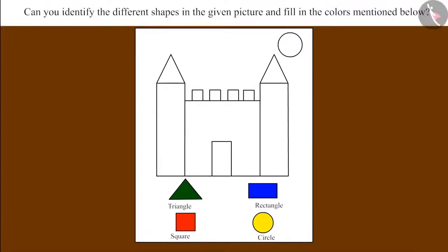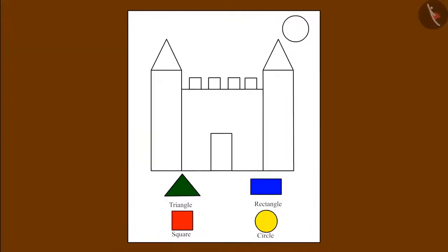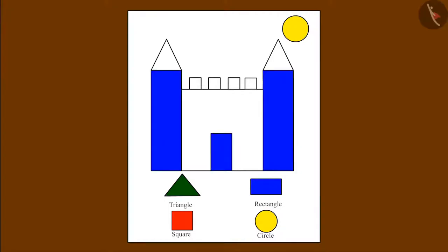So children, all the circles in this picture have to be filled with yellow color. Can you identify the circle in this picture? Yes, this is a circle — it will be filled with yellow color. Now all the rectangles have to be filled with blue color. Can you identify the rectangle in this picture? Here are the rectangles — we will fill blue color in them. After this, fill the square with red color. Can you identify the squares? Here are the squares — we fill them with red color. Now we come to the triangle — in the triangle we have to fill green color. Color is now filled in the whole picture.